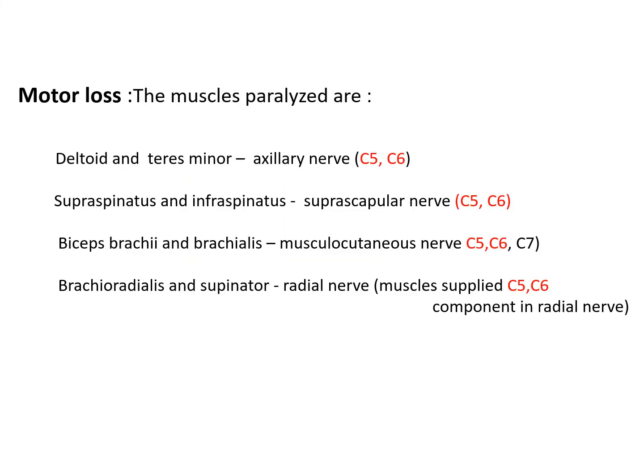Which muscles are paralyzed in Erb's paralysis? Since the upper trunk is formed by ventral rami of C5 and C6, the muscles innervated by C5 and C6 via the brachial plexus will be paralyzed. There are four nerves carrying fibers from C5 and C6: the axillary nerve supplying deltoid and teres minor; the suprascapular nerve supplying supraspinatus and infraspinatus; the musculocutaneous nerve supplying biceps brachii and brachialis; and the radial nerve supplying brachioradialis and supinator.